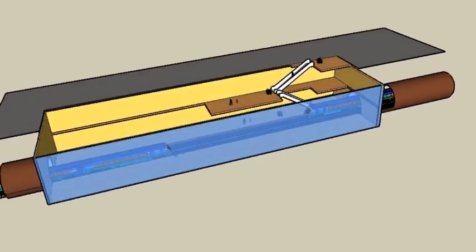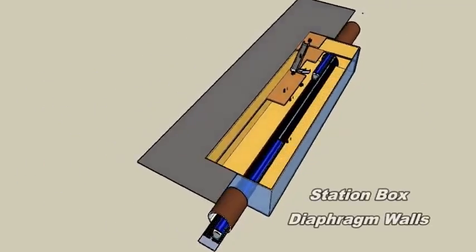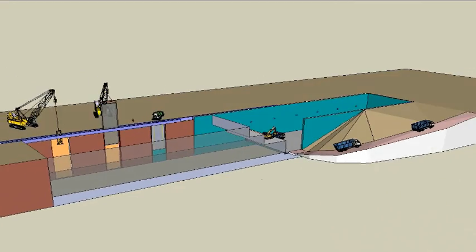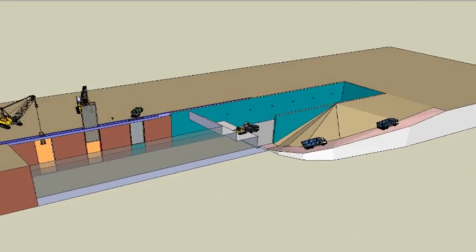Outline construction sequence: Divert roads, footpaths, and underground and overhead utilities outside the area of the proposed site.